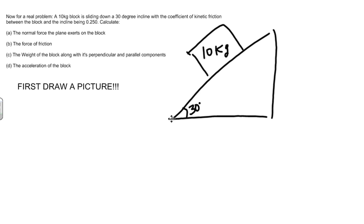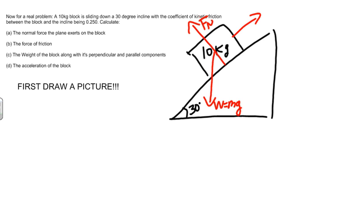Now I'm going to start labeling. First, the weight is pointing straight down, so I'll draw a vector arrow pointing straight down and label it weight equals mass times the acceleration due to gravity. I also know that in order to keep the box on the plane — not going through it or flying up in the air — the plane must exert a force onto the box. We'll call that the normal force. Finally, because friction is involved and the box is going to slide down the plane, the force of friction is going to oppose that motion.